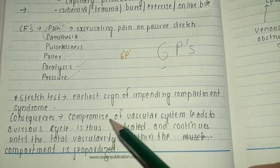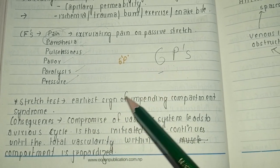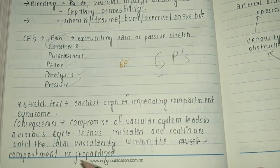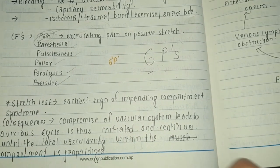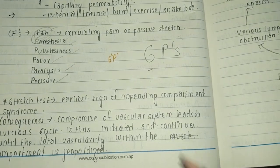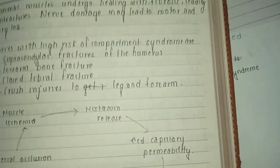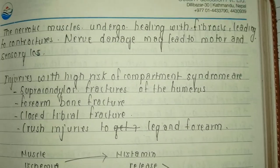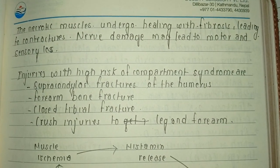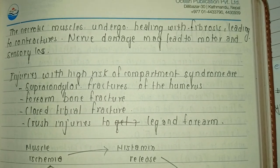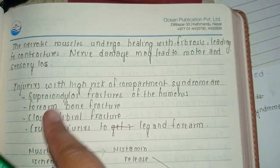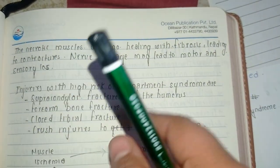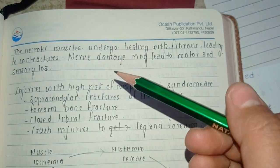The consequences of compartment syndrome involve compromise of the vascular system, which leads to a vicious cycle that is initiated and continued until the vascularity within the compartment is jeopardized. The necrotic muscle then undergoes healing with fibrosis, leading to contractures, and there is nerve damage which may lead to motor and sensory loss.